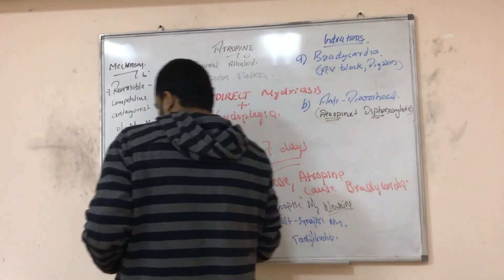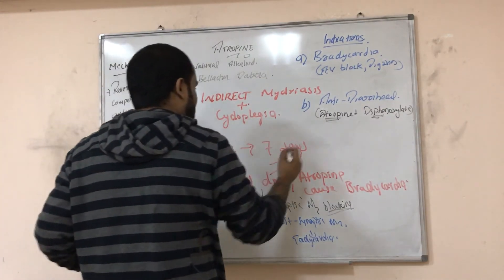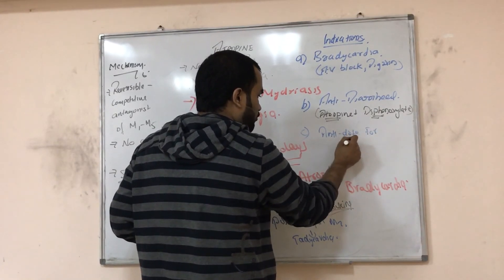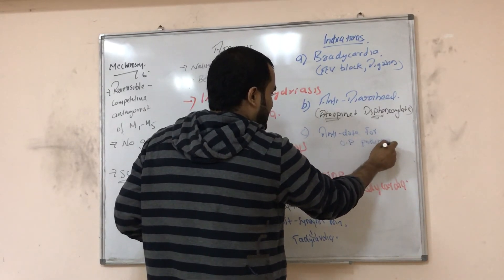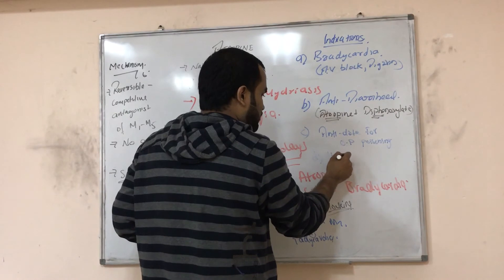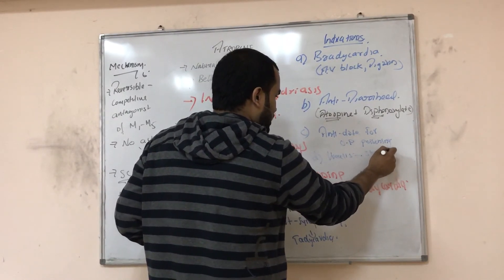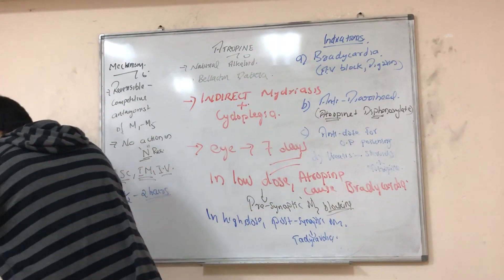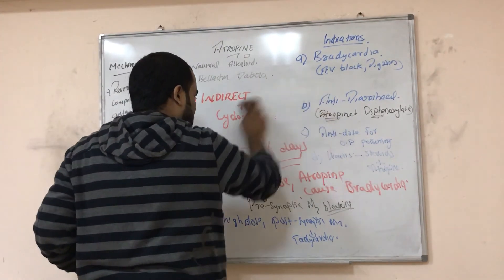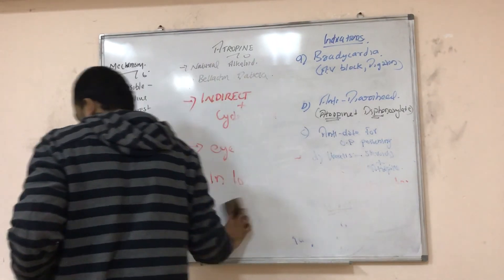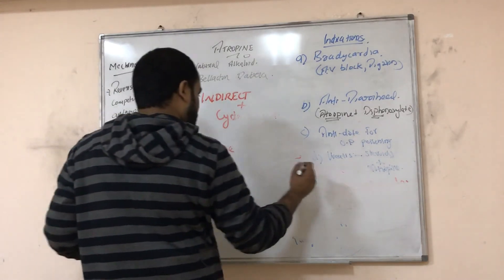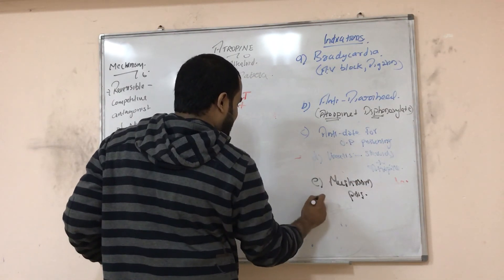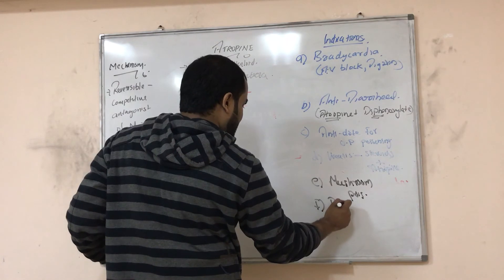Atropine is used for organophosphate poisoning. It is also used in uveitis — we give steroid plus atropine. Mushroom poisoning activates the parasympathetic system, so atropine can block it. Atropine is also given before surgery in the pre-operative period because it decreases secretions.